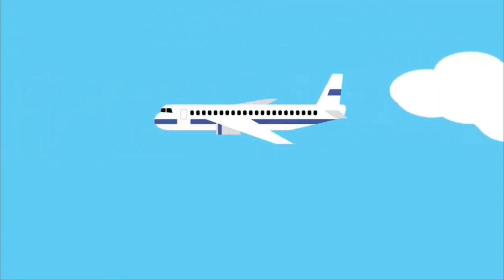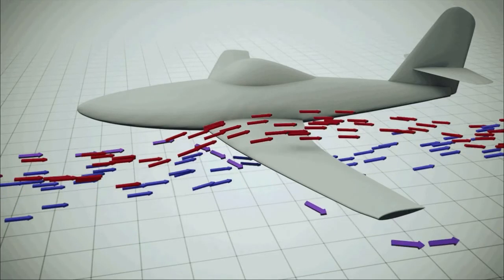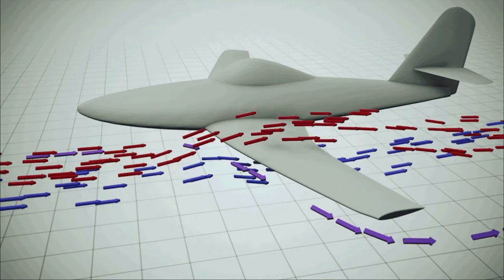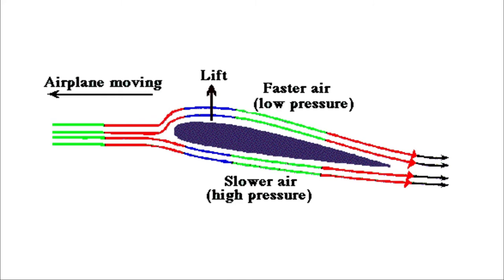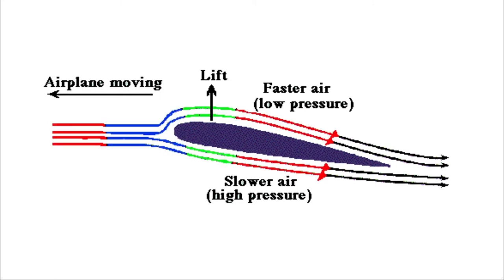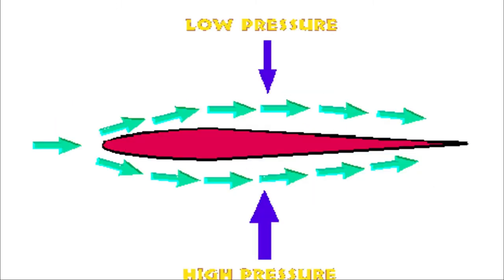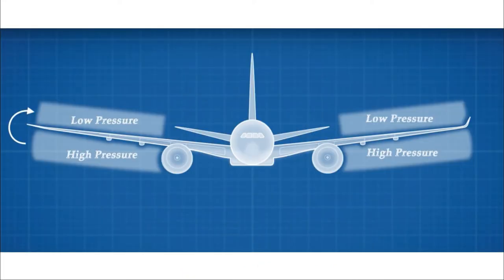Consider an airplane flying with some velocity V. As the airplane moves forward, air particles pass over the upper and lower surfaces of the wing. According to theory, air moving on the upper surface moves at a faster velocity than on the lower surface. As a result, we have lower pressure on the upper surface and higher pressure on the lower surface. Due to this pressure difference, lift is generated on the wing.